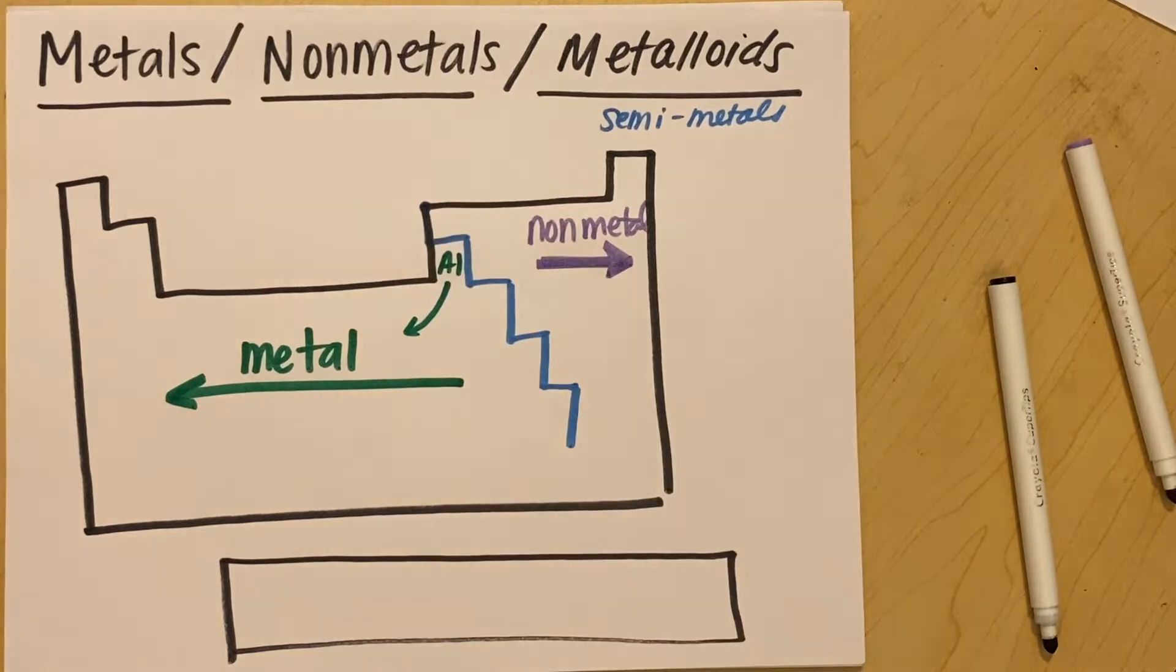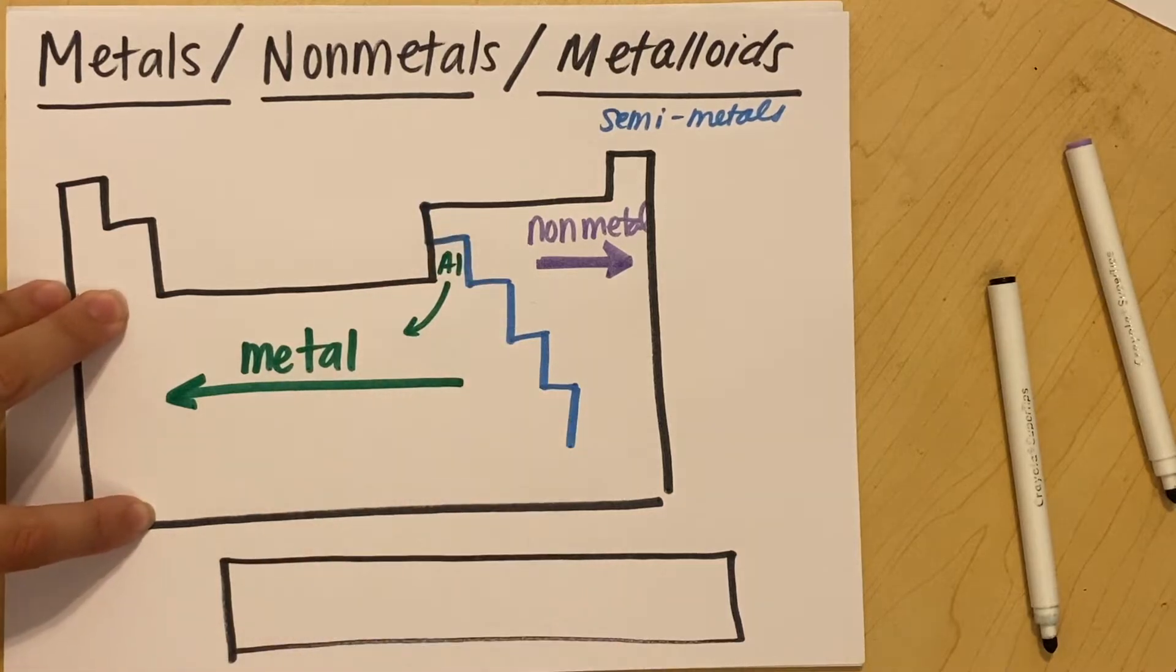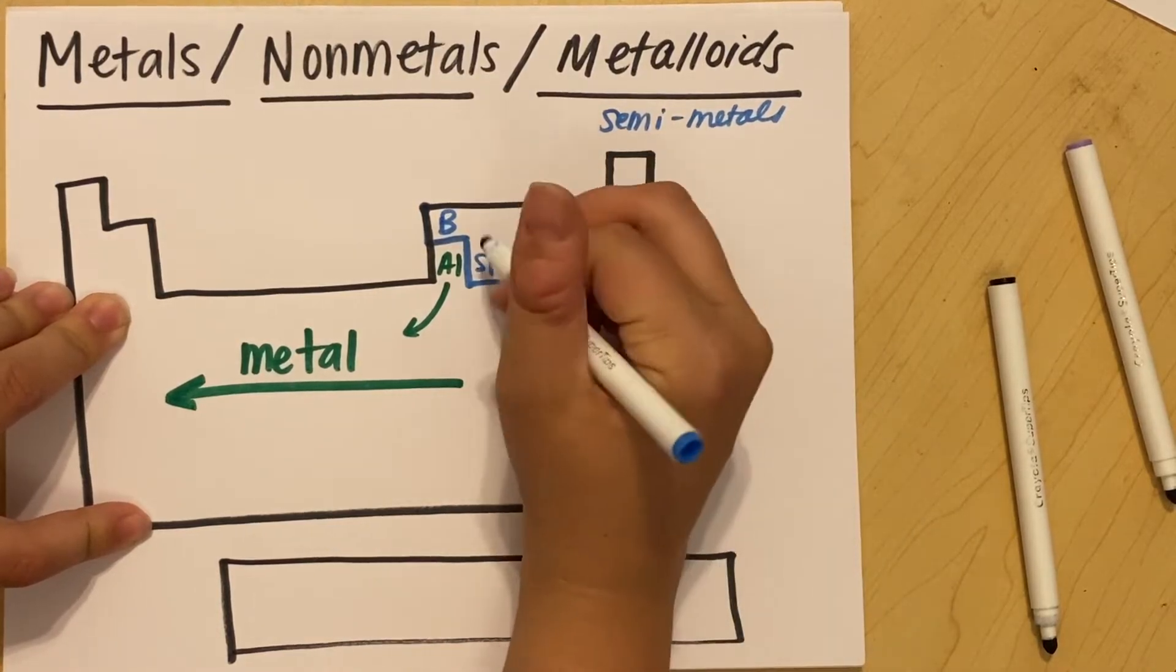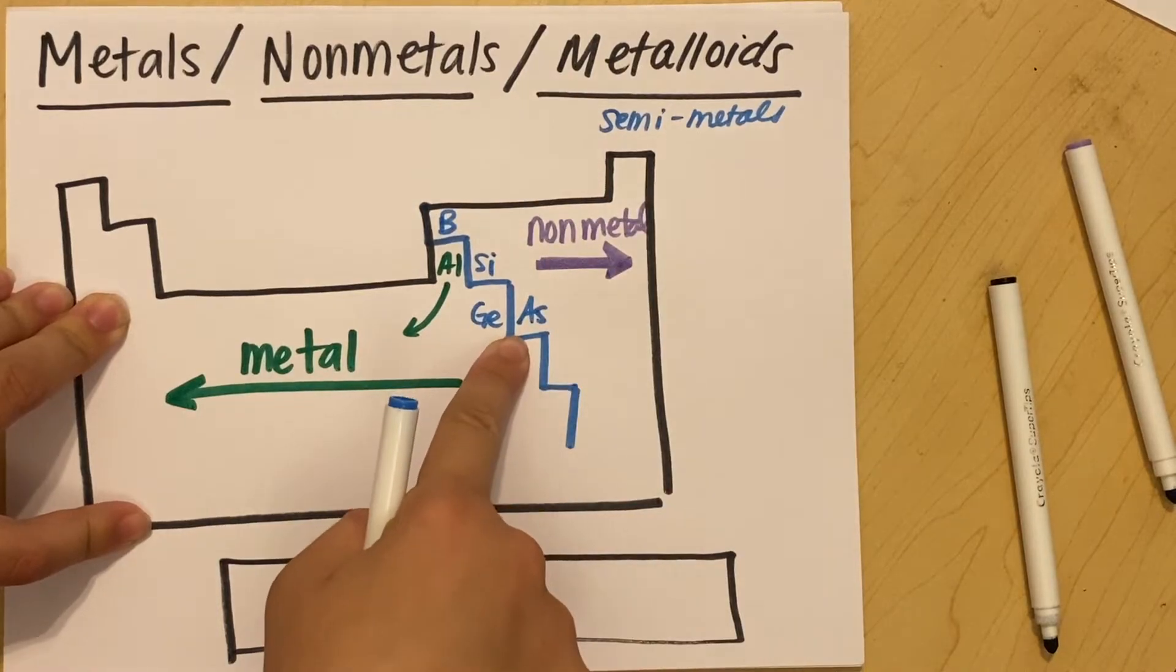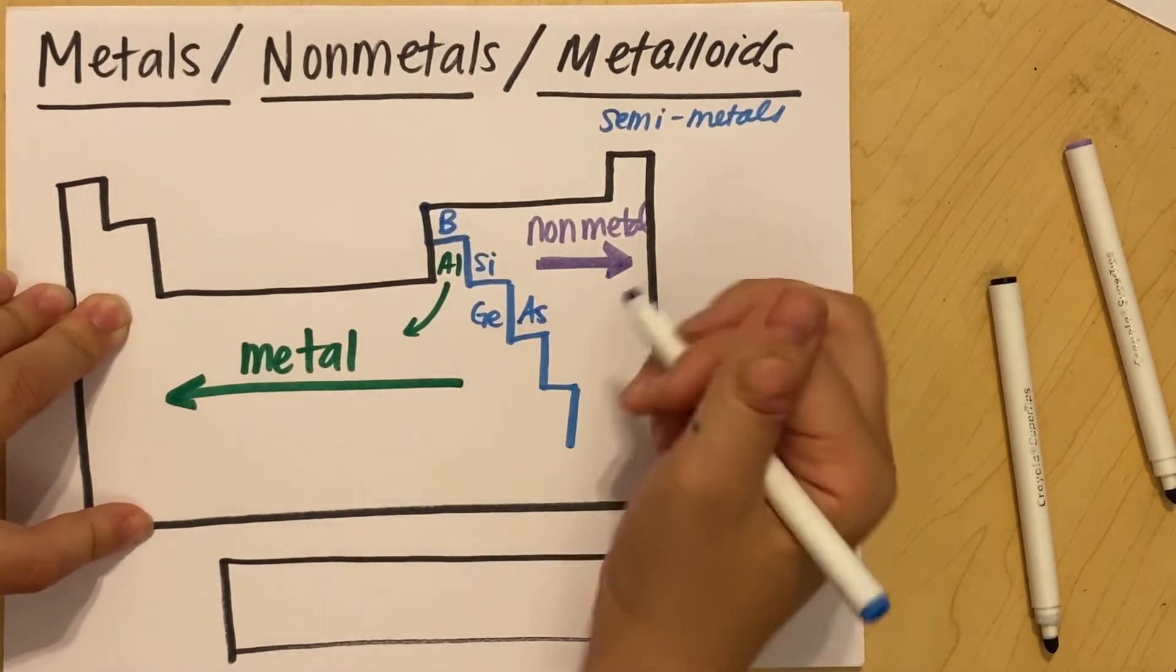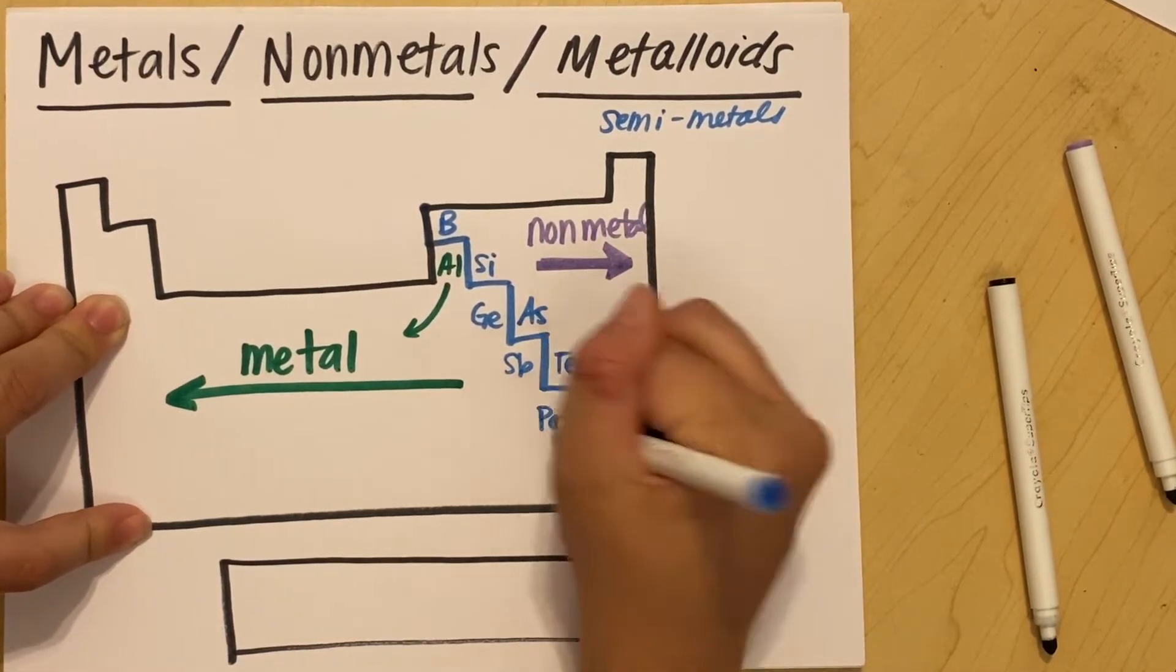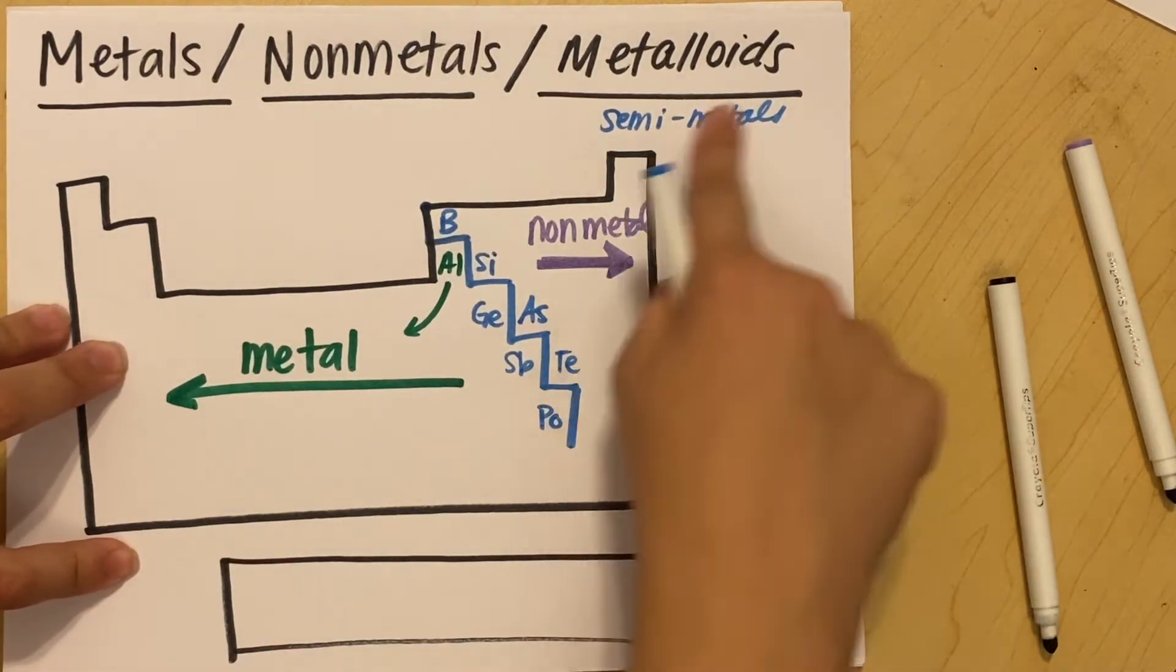And then along the stair step, anything touching the stair step is going to be a semi-metal, except for aluminum. We know that aluminum is a metal, right? You have your aluminum cans. You have aluminum foil. Aluminum is a metal, so he does not count as a semi-metal. Other than that, the things that are touching your stair step are going to be metalloids or semi-metals. So boron, silicon, germanium, arsenic, which is A-S. Arsenic. A-R is argon. So be careful of that. S-B is antimony, tellurium, polonium. So here are your semi-metals or metalloids.